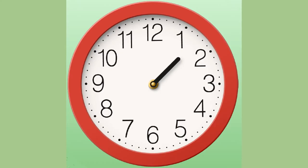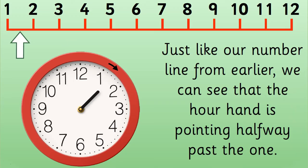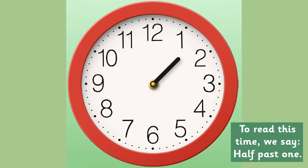What time do you think this clock is showing? Think back to your number line activity at the beginning of this lesson. The hour hand is halfway between the 1 and 2. Still need some clues? Well, just like our number line from earlier, we can see that the hour hand is pointing halfway past the 1. So, to read this time, we say half past 1.